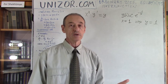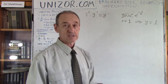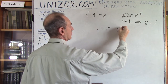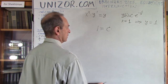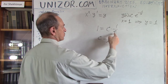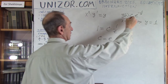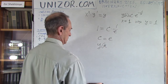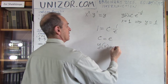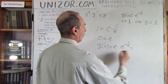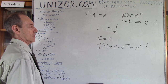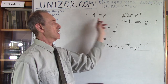Using the initial condition y(1) = 1: substituting gives 1 = c · e^(-1). Since e^(-1) = 1/e, we get c = e. So the particular solution is y = e · e^(-1/x) = e^(1 - 1/x). This particular solution satisfies both the differential equation and the initial condition.